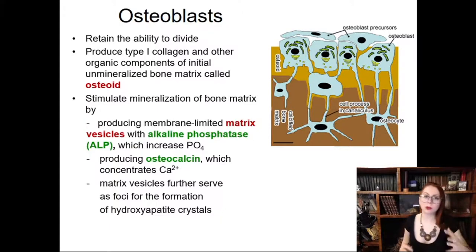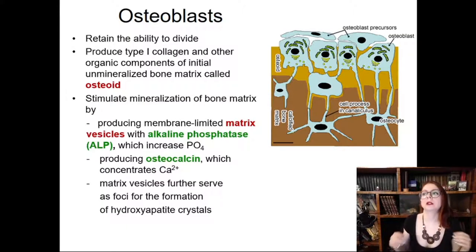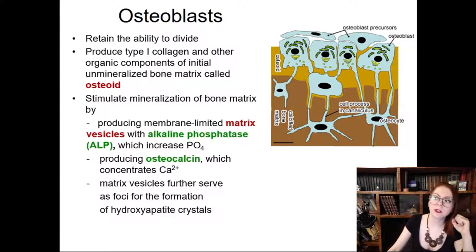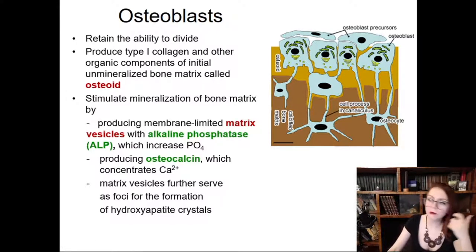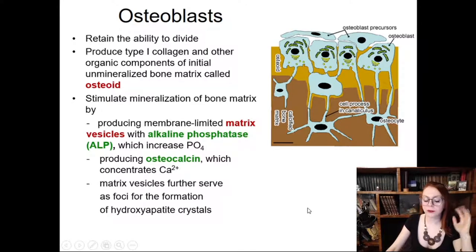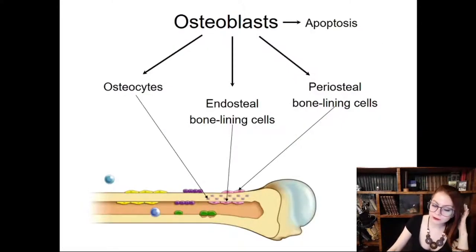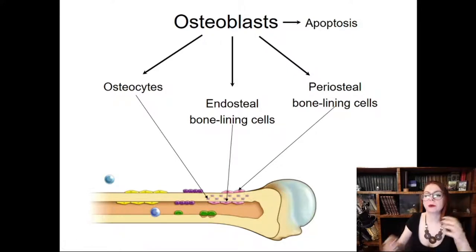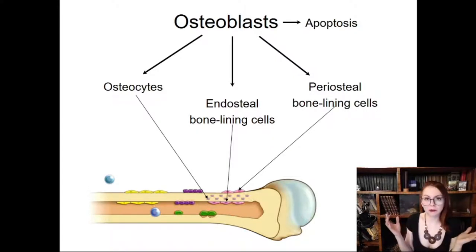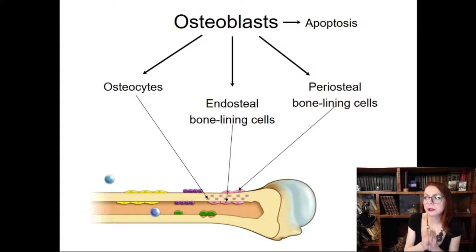So osteoblasts first produce all the organic components (osteoid) and then, with the help of matrix vesicles, stimulate mineralization. Osteoblasts are very active cells containing lots of rough endoplasmic reticulum, Golgi complex, and many other organelles. After performing their function, they have different fates: they can differentiate into mature osteocytes when they become embedded inside the matrix they produce, shrinking to about 70% of their original size.